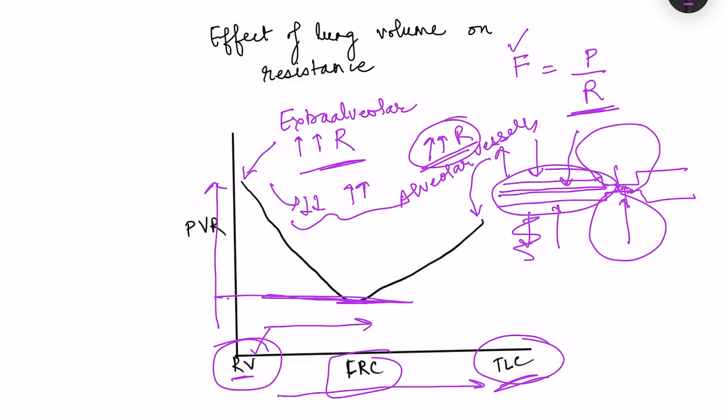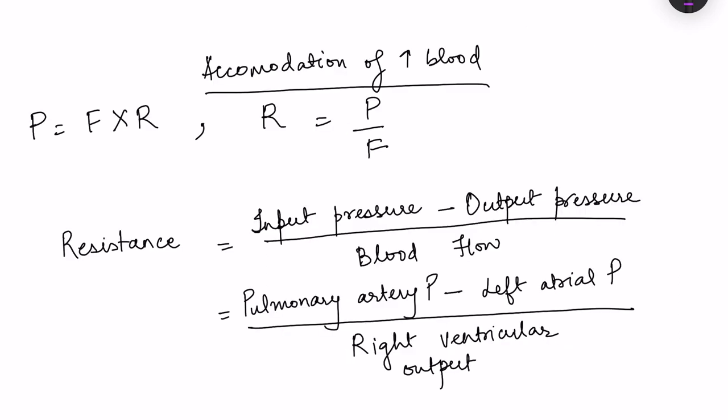That is the effect of lung volume on resistance, which in turn affects pulmonary blood flow. When right ventricular output increases — for example during exercise — cardiac output goes up and tissue oxygen requirements increase. The entire blood going out of the right ventricle must be accommodated in pulmonary circulation, oxygenated, and delivered to systemic circulation.